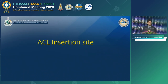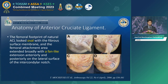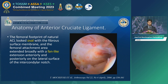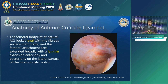The insertion site, as previously mentioned, looks oval — its attachment runs from posterior to anterior. It is described as fan-shaped or ribbon-shaped depending on the literature. When you can identify the femoral footprint by the ACL remnant in an acute case, just like this case, when you get a close look, you can define the injury site around here.